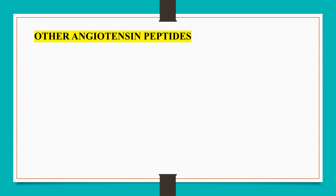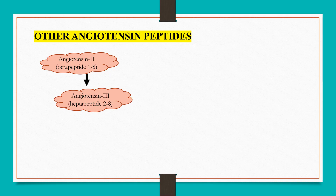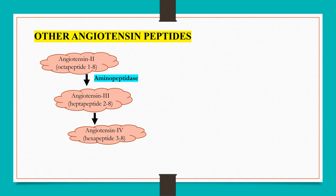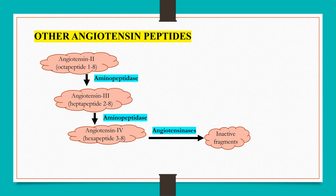Other angiotensin peptides: angiotensin 3 and some other biologically active angiotensin peptides are produced in small quantities whose physiopathological role is not well understood. Angiotensin 2 is converted to angiotensin 3 in the presence of aminopeptidases. Angiotensin 3 is converted to angiotensin 4 in the presence of the same aminopeptidases. Angiotensin 4 produces inactive fragments in the presence of angiotensinases.